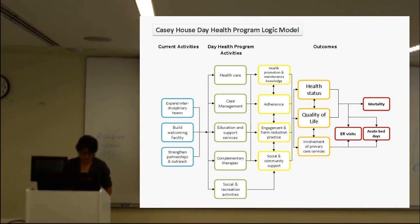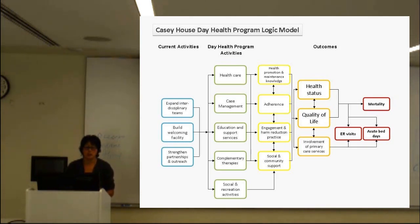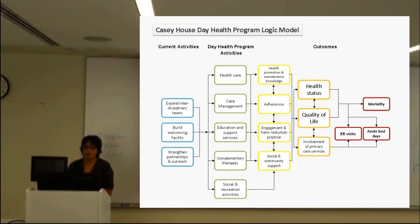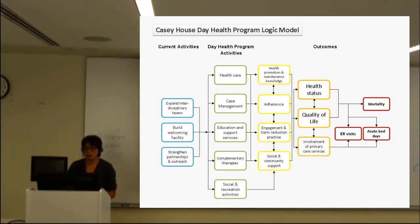In terms of evaluation, I drew up a logic model for the day health program to start my thought process and discussion. On the far left is where we are now — building interdisciplinary teams, building a facility, strengthening outreach partnerships. In green are the programs delivered through the day health program, and the outcomes. In red are ER visits, acute bed days, and mortality. We do have to look at those for reporting to the ministry and securing funding, but the more important challenge is the complex, holistic outcomes — which ones matter most and what measures should we use?